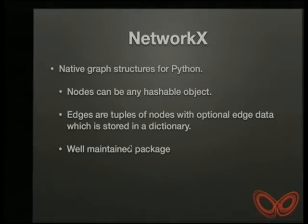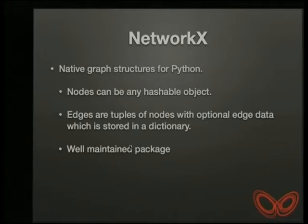The really nice thing about NetworkX is that nodes can be anything that's hashable — any object you want can represent a node: a string, a number, or a Python object. It's really flexible in terms of how you build it. Edges are just tuples of nodes; in an undirected graph the order doesn't have meaning, but in a directed graph the first part of the tuple is the source node and the second is the sink node. It's a well-maintained package — about 12 years old, constantly updated, with absolutely fantastic documentation.